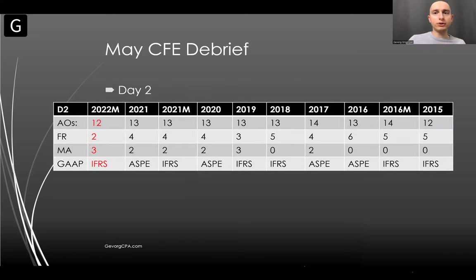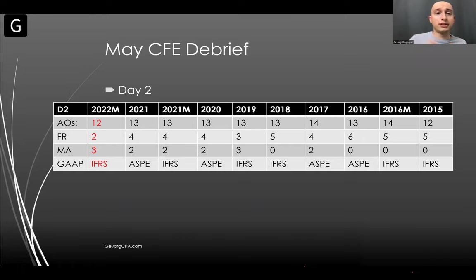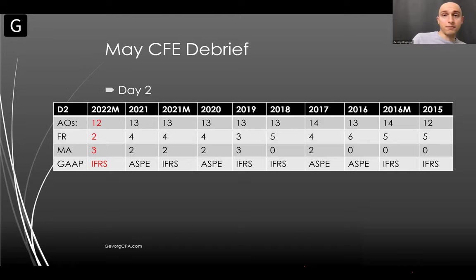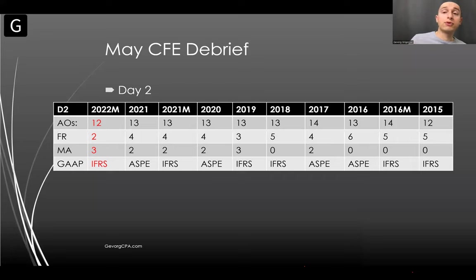Day two is the most technical day of the CFE. It tests you on three subjects: financial reporting, management accounting, and your specific role area — PM, assurance, finance, or tax. This year we had about 12 to 13 AOs, similar to last year. There were more MA questions than FR: three MA and just two FR. In previous years it was consistently four FR and two MA, so people preparing for FR were surprised when it didn't come up much.